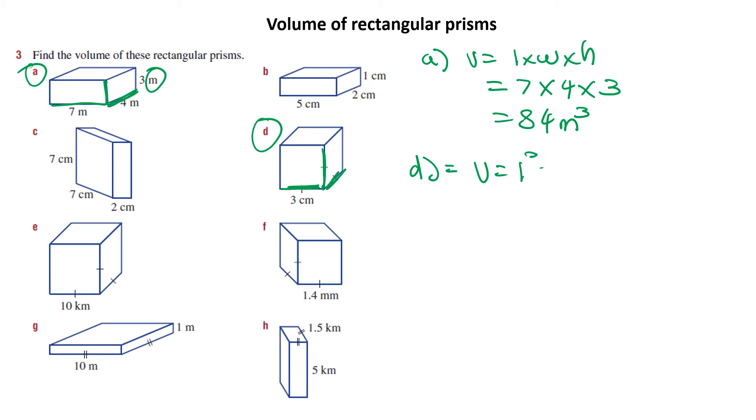So if I did D, volume equals length cubed. So I'm going to go 3 cubed, which basically means 3 times 3 is 9 times 3 is 27, so I'm going to write 27. And remember, my units here are centimeters, so I'm going to go centimeters cubed.